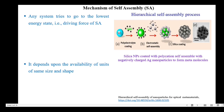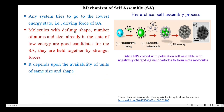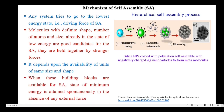The next topic is the mechanism of self-assembly. In general, any system wants to go to the low energy state — that is the basic driving force of self-assembly. Therefore, molecules with a definite shape, number of atoms and size which are in low energy are good candidates for self-assembly, and they are held together by stronger forces. The self-assembly process depends upon the availability of units of same size and shape. When these building blocks are available, the state of minimum energy is obtained spontaneously even in the absence of any external forces.